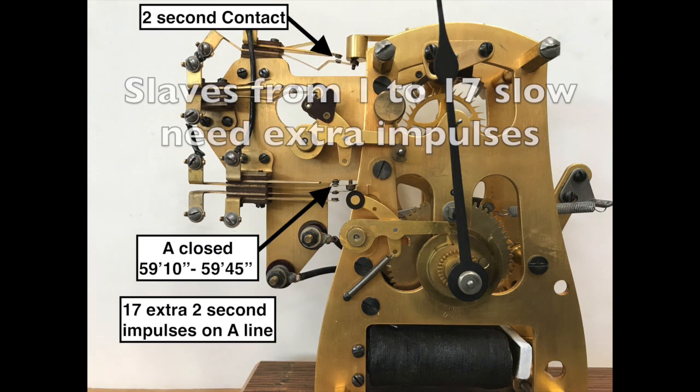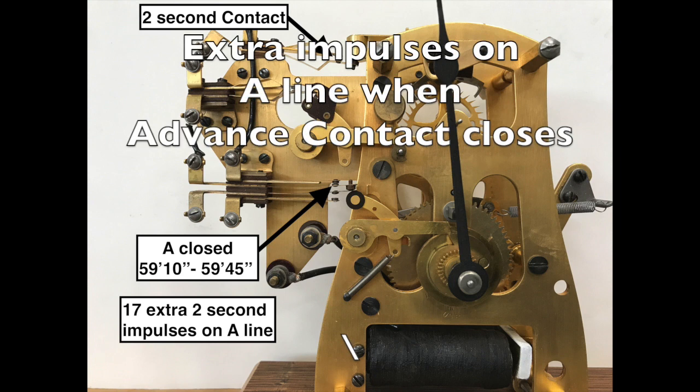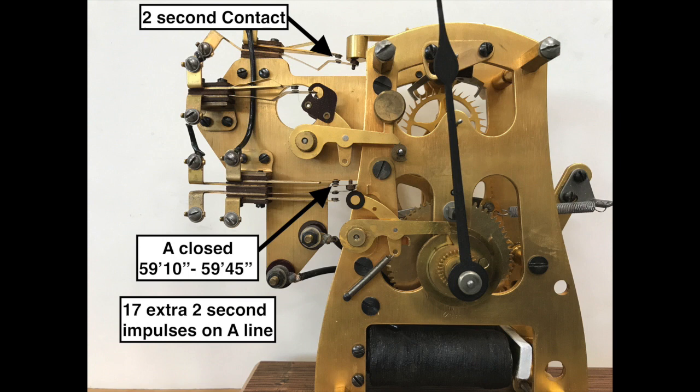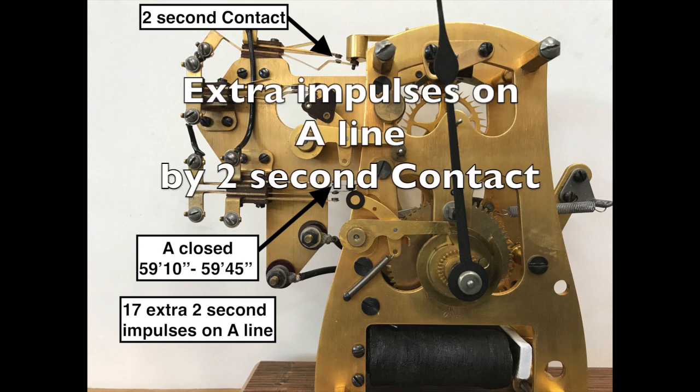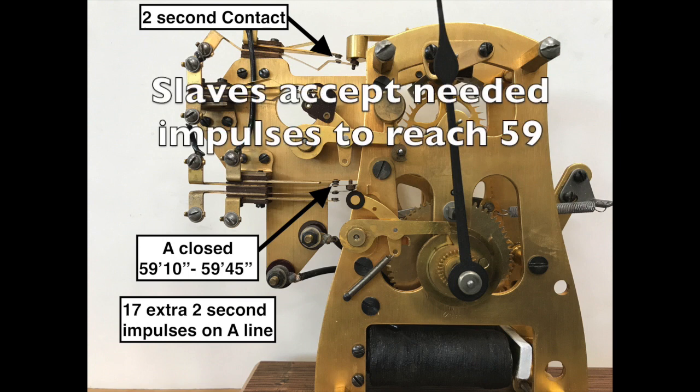Slave clocks that are from 1 to 17 minutes slow can be corrected with extra impulses on the A line when the advance contact closes. The advance contact is active between 59.10 and 59.45. The extra impulses are generated by the 2 second contact. The slaves accept as many 2 second impulses as needed to reach the 59th minute.